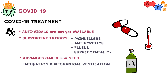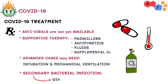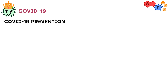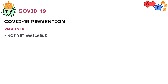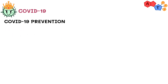Also, some patients might have secondary bacterial infection, in which case they may need antibiotics. As for vaccines, unfortunately there is no proven vaccine against this disease yet, though trials are still taking place. For prevention, try to follow these points — they will definitely decrease your chances of getting COVID-19.